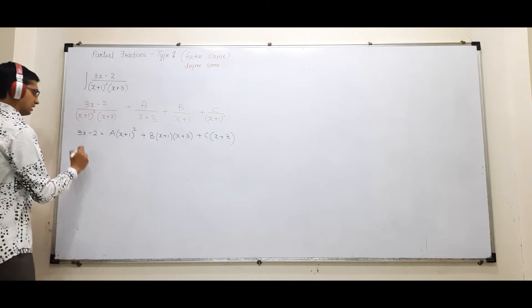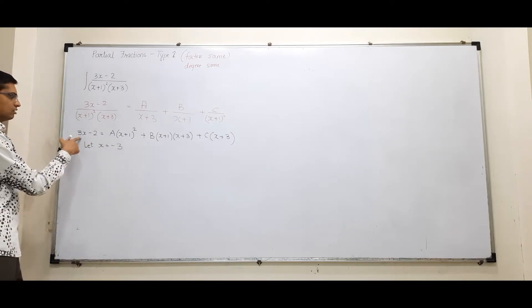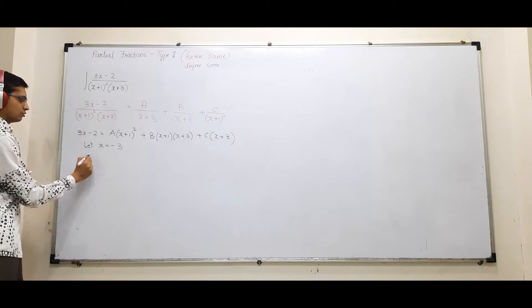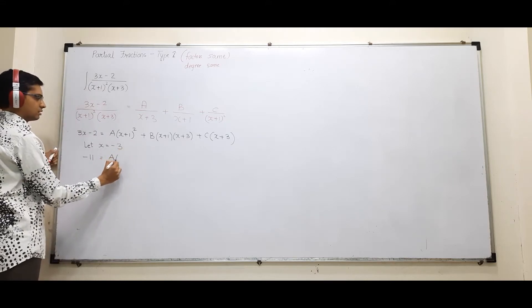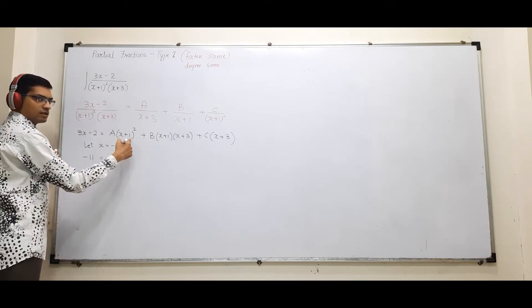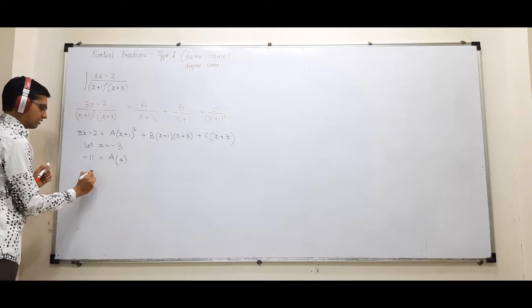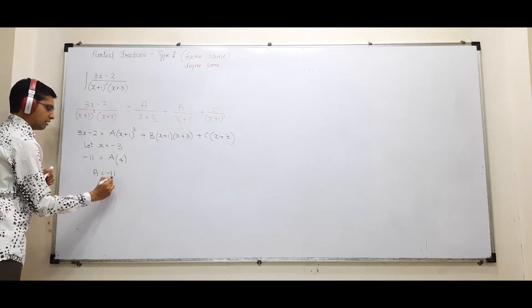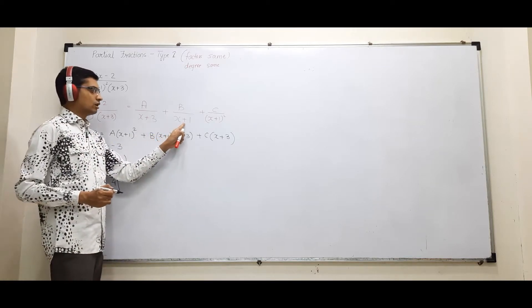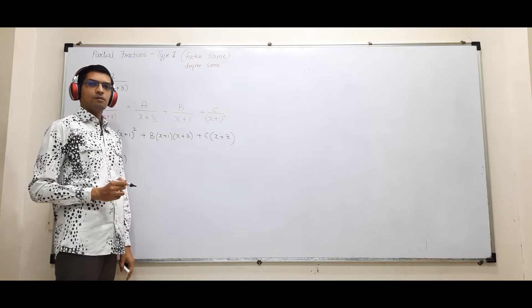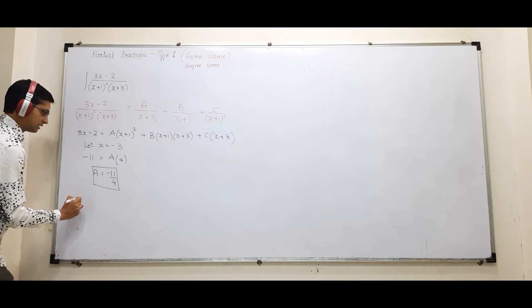Now substitute x = -3. Then: -9 - 2 = -11. A times (-3+1)² = A times (-2)² = 4A. Therefore A = -11/4.